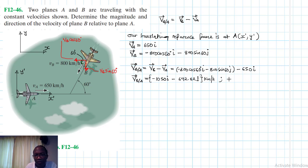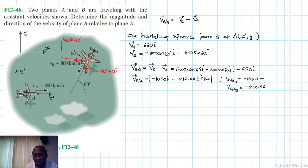So VB/A in the x-direction equals negative 1050, and VB/A in the y-direction equals negative 692.82. These are in kilometers per hour.